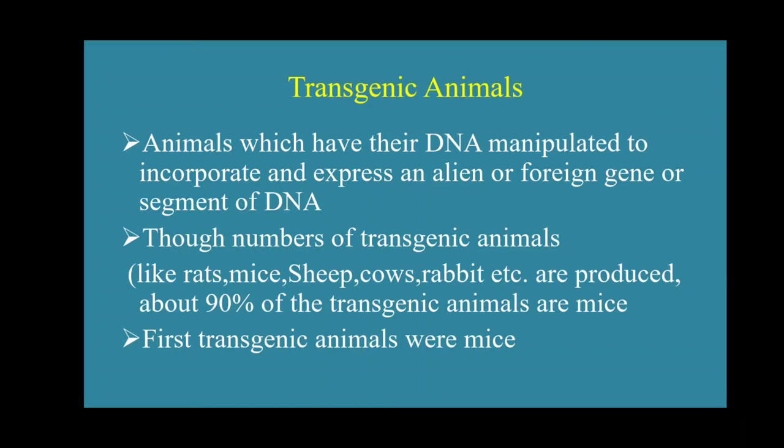That makes the animal a transgenic animal. Transgenic animals include rat, mice, sheep, cow, rabbit, etc. About 90% of transgenic animals are mice, so mostly this experiment is carried out in mice. You need to remember that the first transgenic animal were also mice.